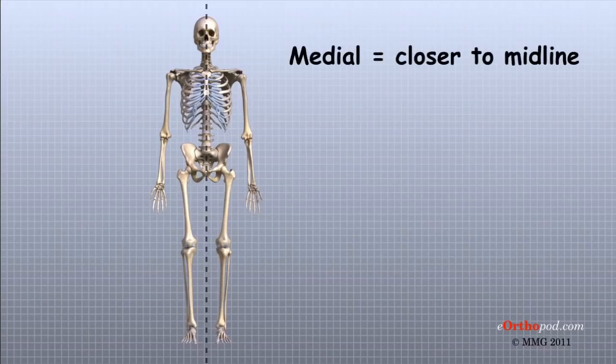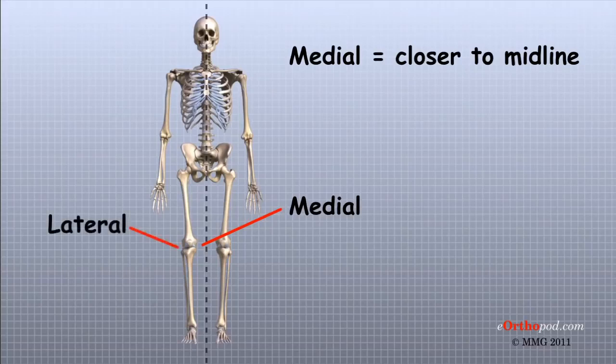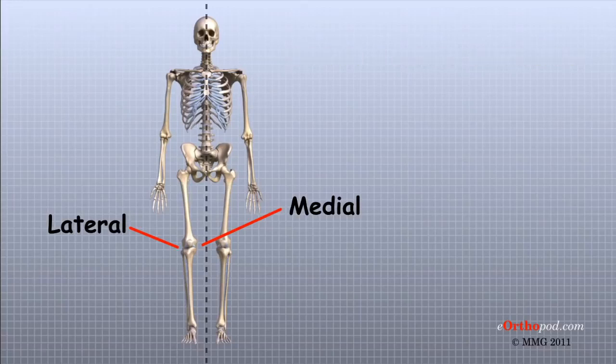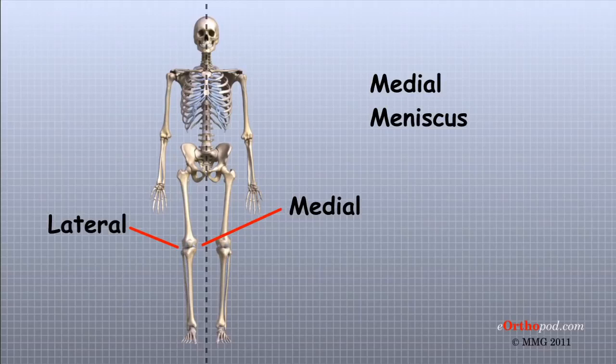For example, medial means closer to the midline, so the medial side of the knee is the side that is closest to the other knee. The lateral side of the knee is the side that is away from the other knee. Structures on the medial side usually have medial as part of their name, such as the medial meniscus.